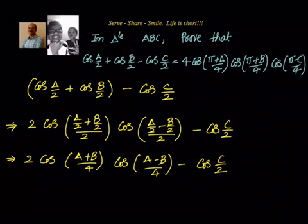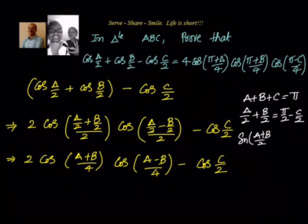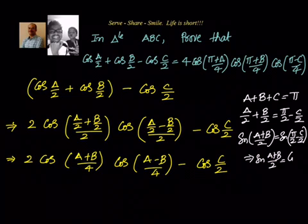Can we convert this C in terms of A+B using the angle sum property? We know that A + B + C = π, which means A/2 + B/2 = π/2 − C/2. Applying sin on both sides: sin((A+B)/2) = sin(π/2 − C/2) = cos C/2. Therefore, instead of cos C/2 we can write sin((A+B)/2).